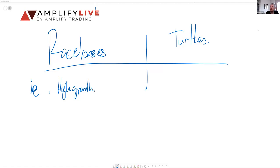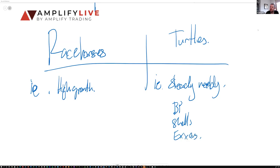And the turtles are your steady eddies. This is going to be your BPs, shells, Exxons, et cetera. The racehorses are going to be the speculative companies, the ones that are breaking new ground, putting in new smart grids. High growth, for example, would be Tesla. That's a racehorse.